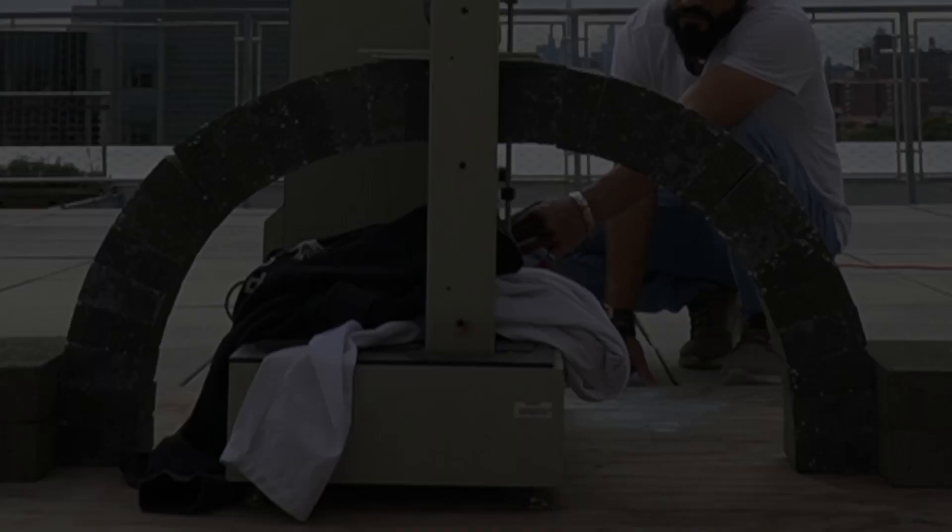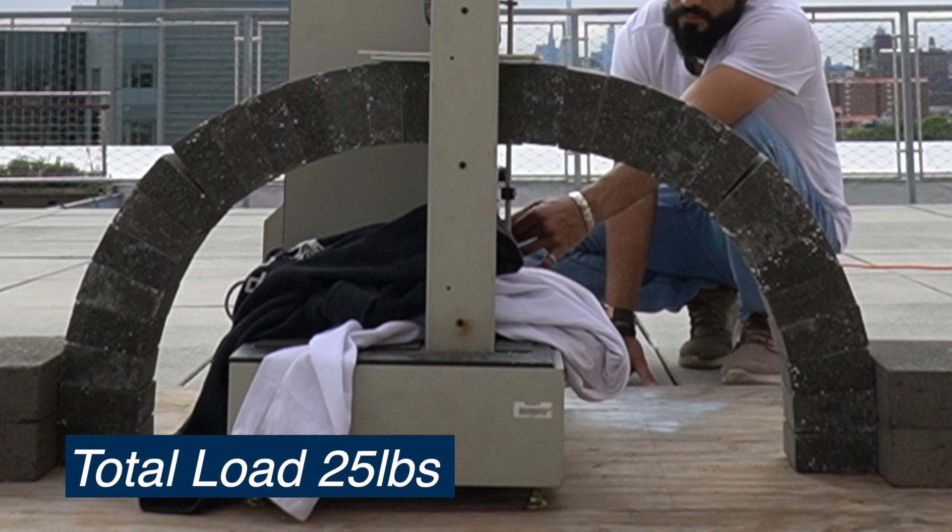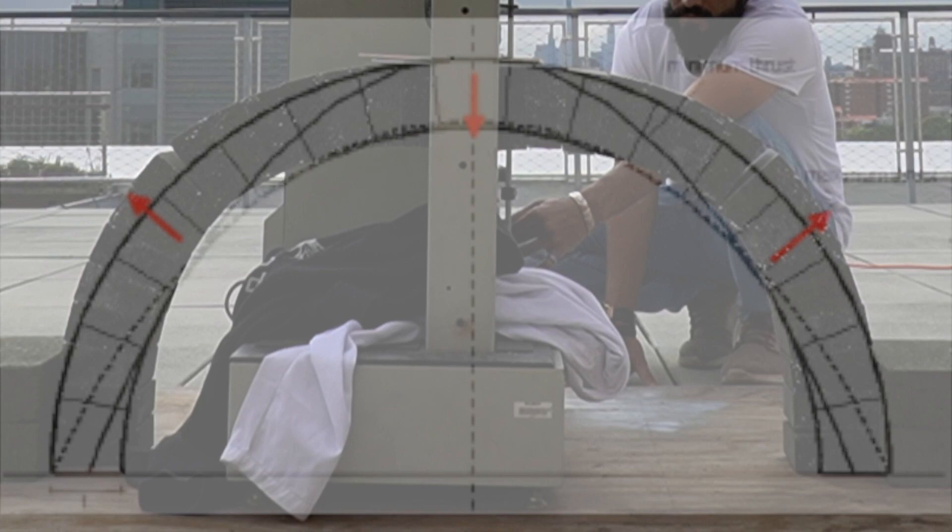Now, let's take a look at that video again to determine why the arch failed in this pattern. As you can see, in a semi-circular arch, the thrust line contacts its sides at 3 points across its span. And these are the resultant places where the arch broke.